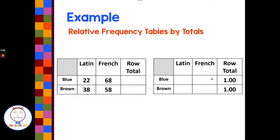So they want this row to add up to 1.0, this row to add up to 1.0. So the first thing we're going to need to do is calculate some totals. So if I do the total people with blue eyes, I would do 22 plus 68 is 90. 38 plus 58 is 96.